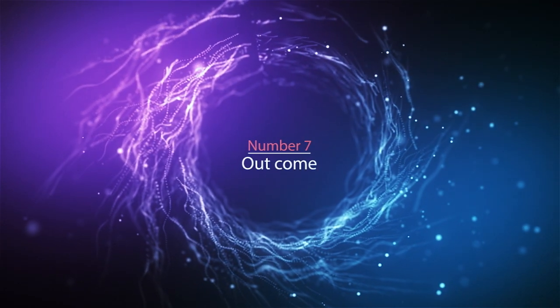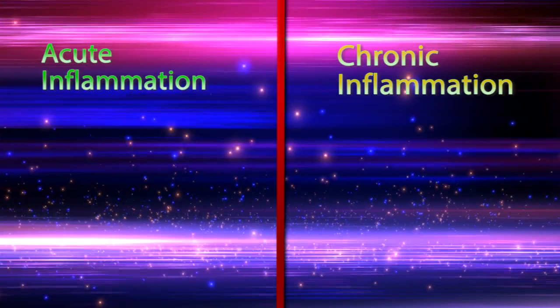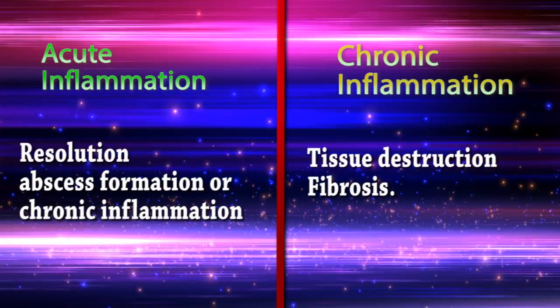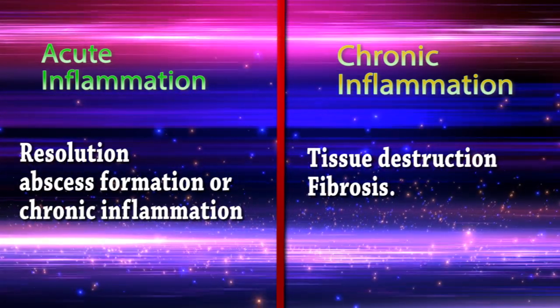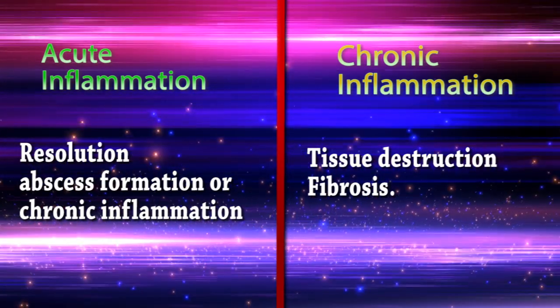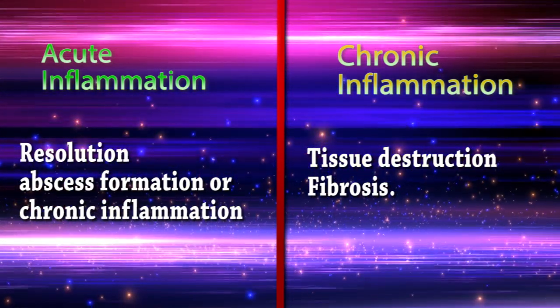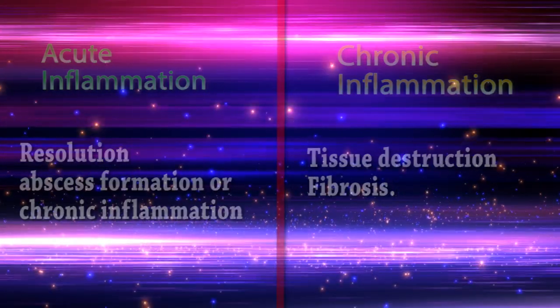Difference number seven: outcome. The outcome of acute inflammation is resolution, abscess formation, or progression to chronic inflammation. Tissue destruction and fibrosis are the outcomes of chronic inflammation.